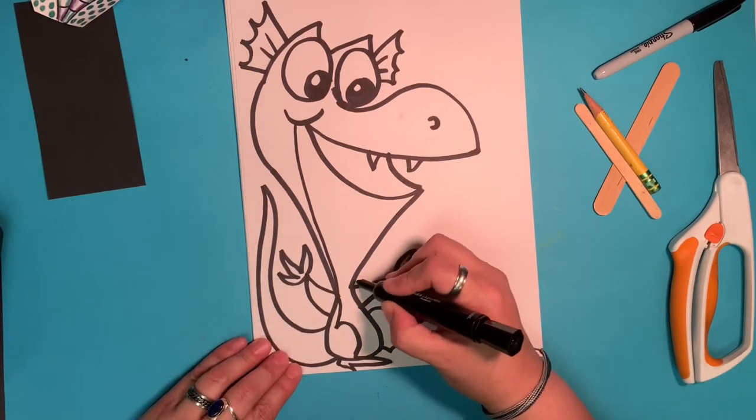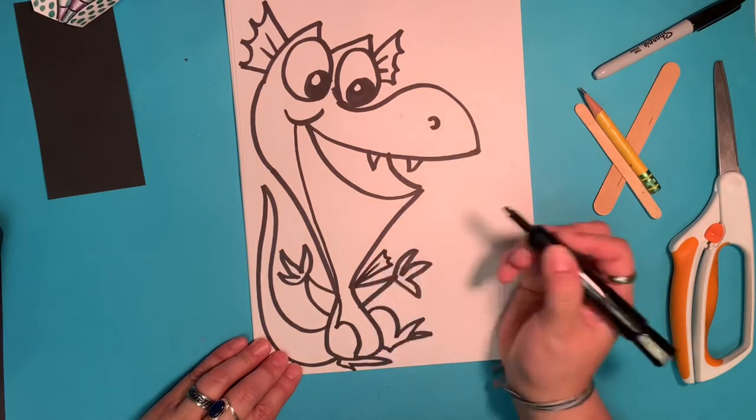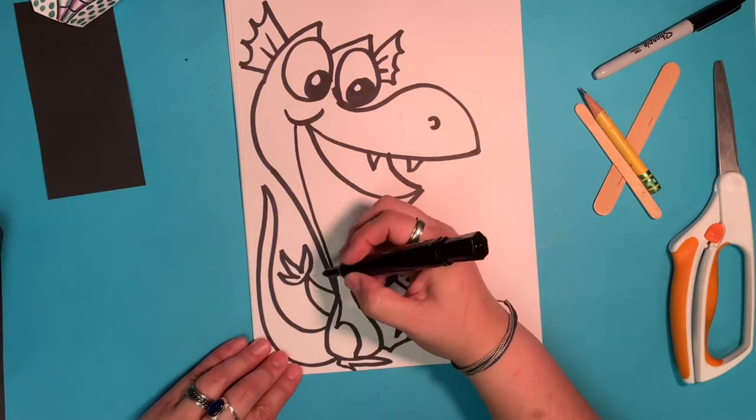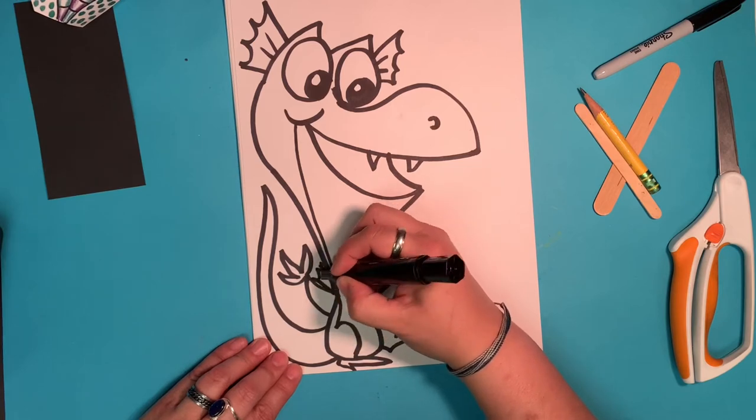Now another thing I forgot. He again, two diagonal lines. And give him tiny little wings. Wings on this side. And some tiny little wings on this side.